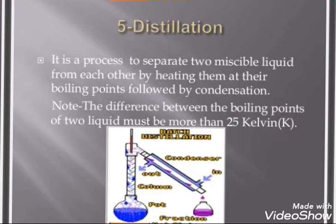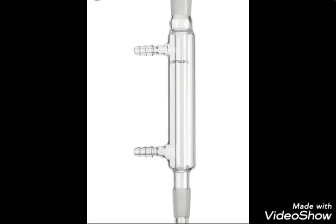Distillation is of two types: simple distillation and fractional distillation. Simple distillation is used when the boiling point difference is more than 25 degrees Celsius or more than 25 Kelvin. Some books mention 30 degrees and others 20 degrees, so we will consider 25 here. If the boiling point difference is more than 25 degrees Celsius, then we use simple distillation.